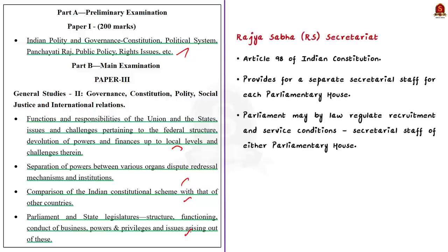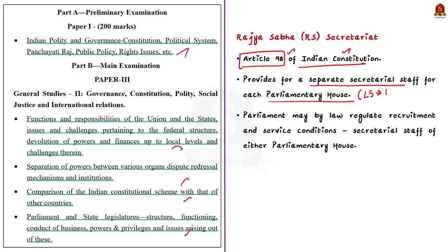First let us discuss about Rajya Sabha Secretariat — its constitutional provisions, roles and functions. The Rajya Sabha Secretariat was set up in accordance with the provisions contained in Article 98 of the Indian Constitution. This article provides for a separate secretarial staff for each parliamentary house — one for Rajya Sabha and another for Lok Sabha. The article also mentions that Parliament may by law regulate the recruitment and conditions of service of persons appointed to the secretarial staff of each parliamentary house.